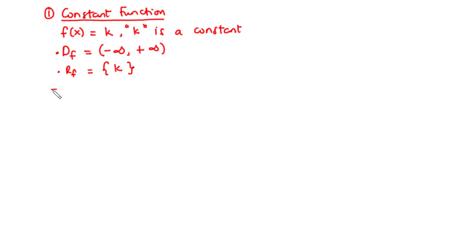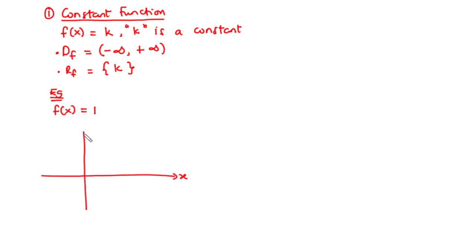Now let's take a typical example. A typical example of a constant function is the function f of x equals 1. To represent this function graphically, we are going to have the x-axis and the y-axis. Let's mark 1, 2, 3, and so on on the x-axis, and on the y-axis we have 1, 2, 3, negative 1, negative 2, and then negative 1, negative 2 on the x-axis.